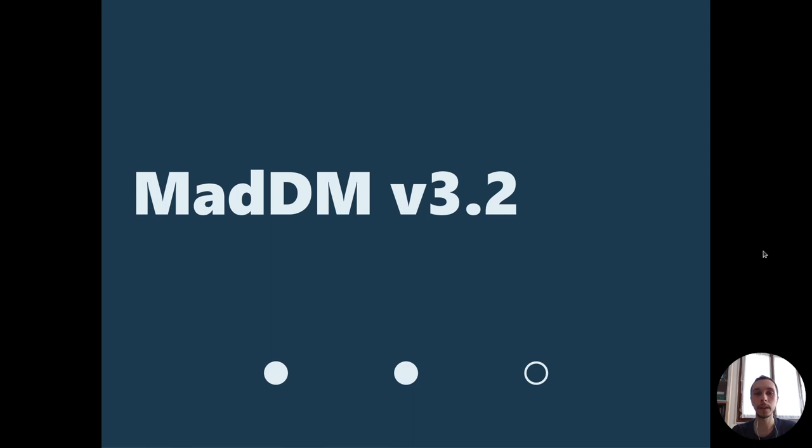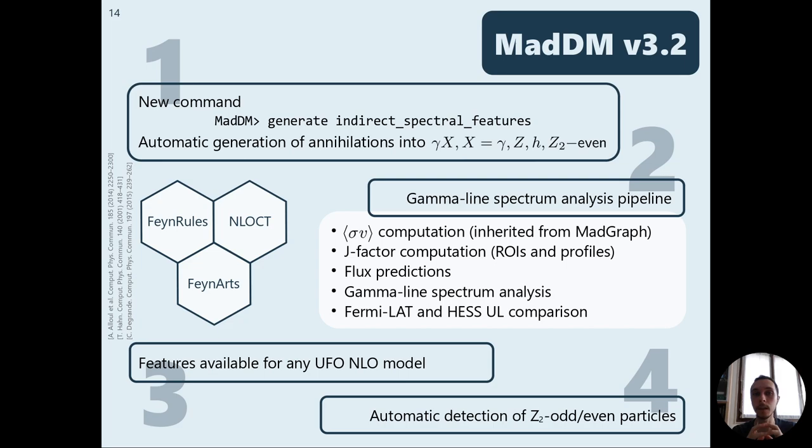Now let's talk about the new version of MadDM, which is version 3.2. In this version, we have added a new command, which is generate indirect spectral features, which is able to automatically generate the loop induced annihilations into gamma x, where x could be gamma, z, or Higgs, and of course any other z2 even particle, which is present in the model. We assume the z2 symmetry to be the symmetry that stabilizes the dark matter. These particles can be automatically detected by the program.